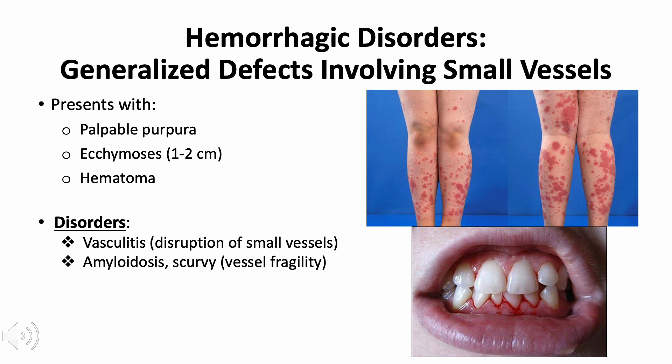For generalized defects involving small vessels, this often presents with palpable purpura and ecchymosis, which are larger hemorrhages about 1 to 2 centimeters in size. The volume of extravasated blood may be large enough to create a palpable mass of blood known as a hematoma. These findings are characteristic of systemic disorders such as vasculitis, or diseases that induce vessel fragility as seen in amyloidosis or scurvy, which is due to vitamin C deficiency.